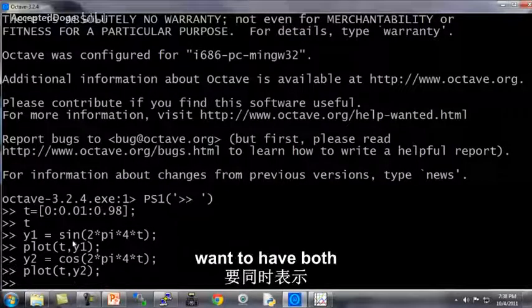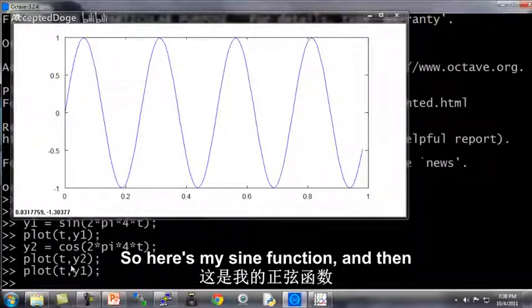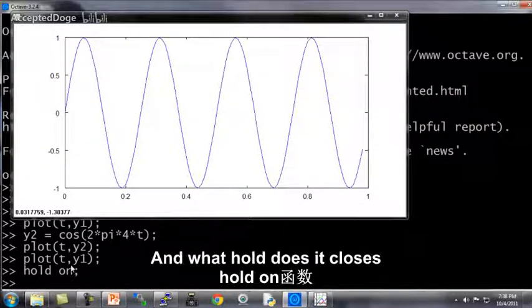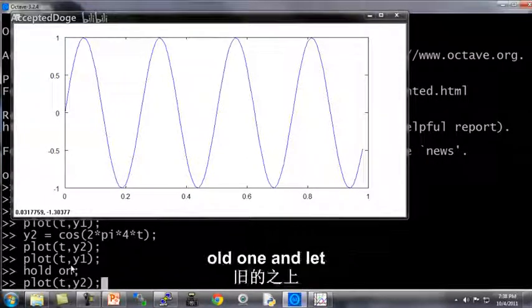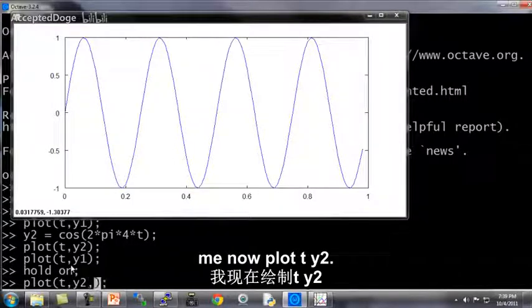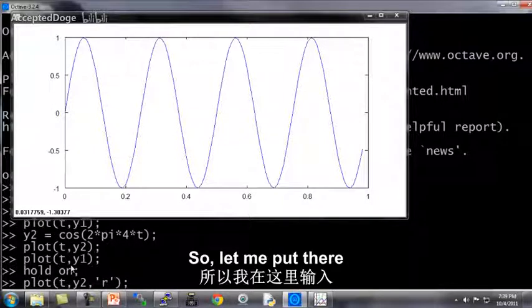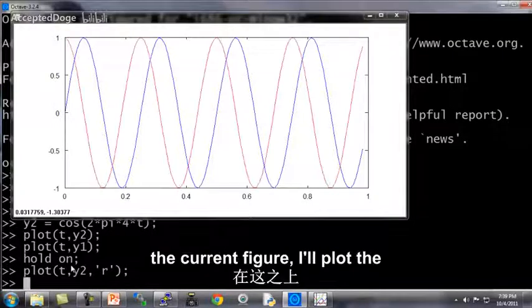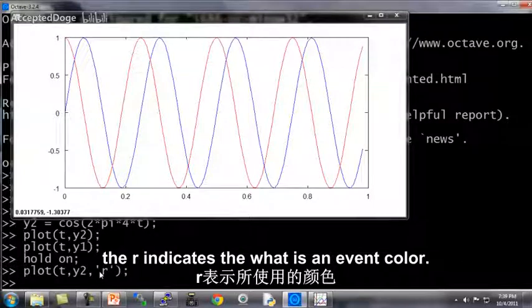Now, what if I want to have both the sine and the cosine plots on top of each other? What I'm going to do is I'm going to type plot t comma y1. So here's my sine function. And then I'm going to use the function hold on. And what hold on does is it causes Octave to now plot new figures on top of the old one. And let me now plot t y2. I'm going to plot the cosine function in a different color. So let me put a r in quotation marks there. And instead of replacing the current figure, I'll plot the cosine function on top. And the r indicates that I want this in a red color.